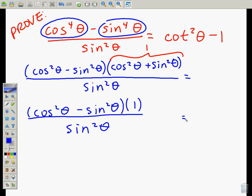So what we can do now is we can split the numerator and we can say that this is equal to cosine squared theta over sine squared theta minus sine squared theta over sine squared theta.